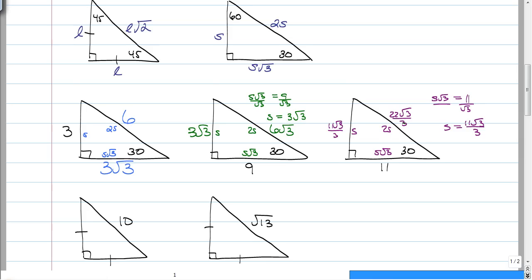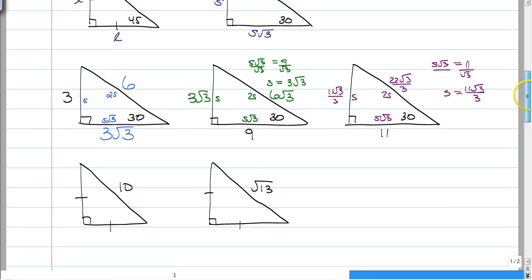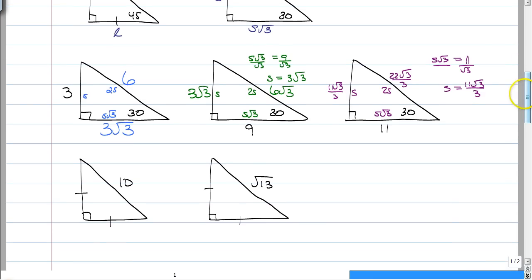Now, if you forgot your 30-60-90, 45-45-90, and how to work with radicals, you might want to refresh a little bit before you start doing a lot of the problems in this chapter. Now, for the L-L-L root 2 ones, your legs are always going to be the same.